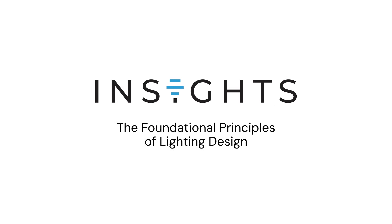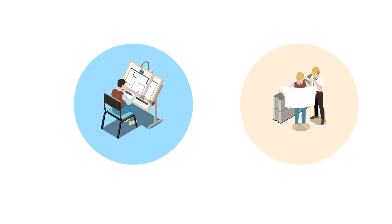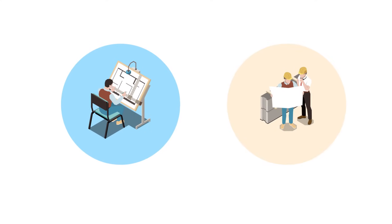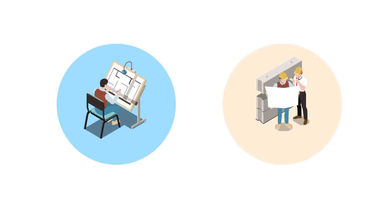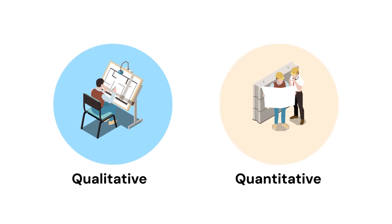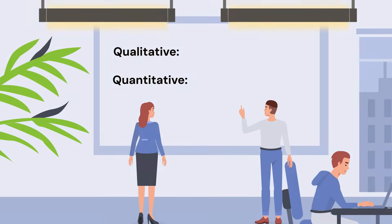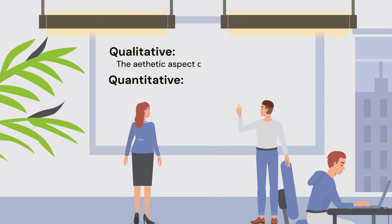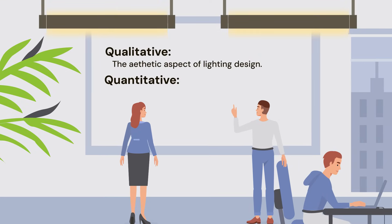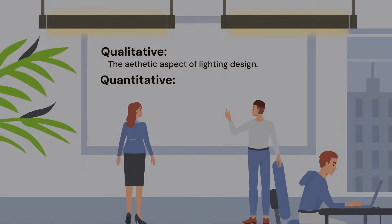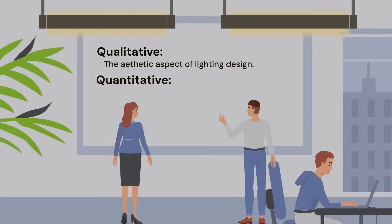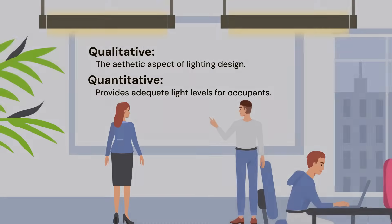Insights presents the foundational principles of lighting design. There are two principles that guide lighting designers and architects: qualitative and quantitative. Qualitative is the aesthetic aspect of lighting design, while quantitative provides adequate light levels for occupants.